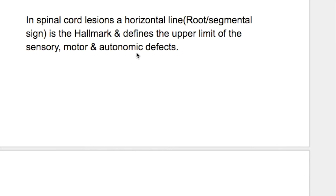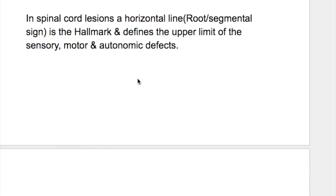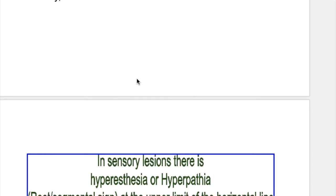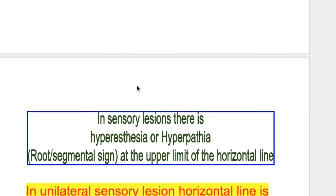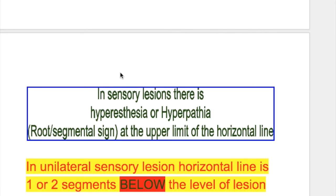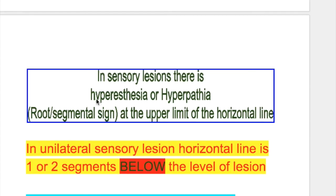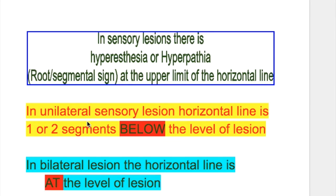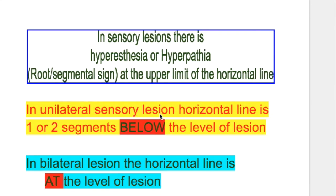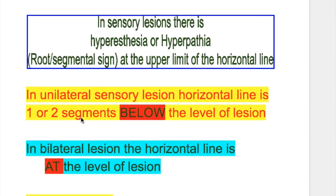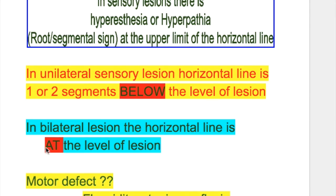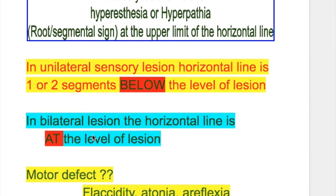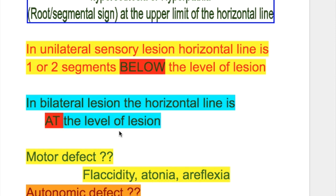MRI usually diagnoses anterior spinal artery syndrome but may be normal during the first day. In spinal cord lesions, the horizontal line is the hallmark and defines the upper limit of sensory, motor, and autonomic defects. In sensory lesions there is hyperesthesia or hyperpathia at the upper limit of the horizontal line. In unilateral sensory lesions, the horizontal line is one or two segments below the level of the lesion; in bilateral lesions, it is at the level of the lesion.